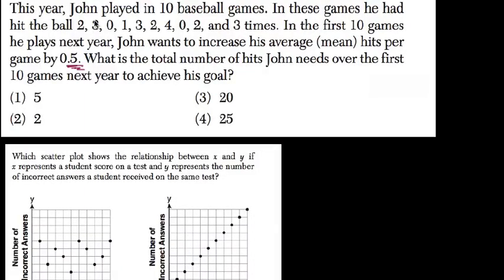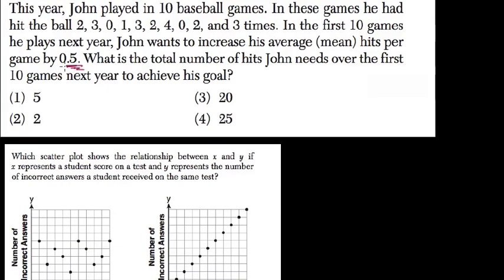Okay, so in this problem, there's a person playing in 10 baseball games this year, and he had hit the ball these many times in each game: 2, 3, 0, 1, 3, 2, 4, 0, 2, and 3 times. In the first 10 games he plays next year, he wants to increase his average hits per game by 0.5. What is the total number of hits John needs over the first 10 games next year to achieve this goal?